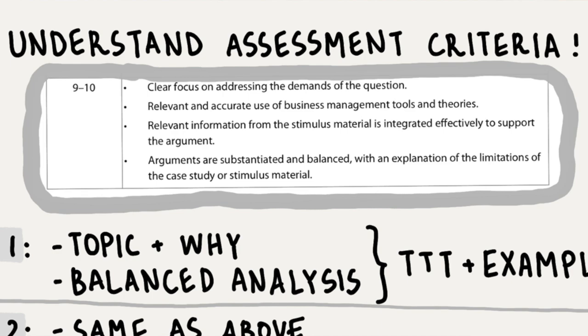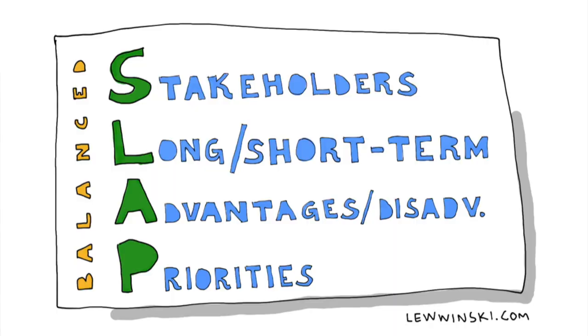Fourth: arguments are substantiated and balanced, with an explanation of the limitations of the case study. Make sure you consider things from both sides — on one hand and on the other. You can use the SLAP rule: consider different perspectives such as stakeholders (internal vs. external), time (short-term vs. long-term), or advantages and disadvantages, then sum up using the organization's priorities. In the new syllabus, you should also write about the limitations of the case study — what information you might need for a more balanced answer.